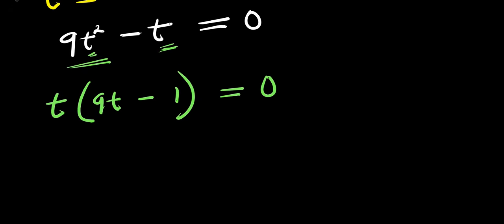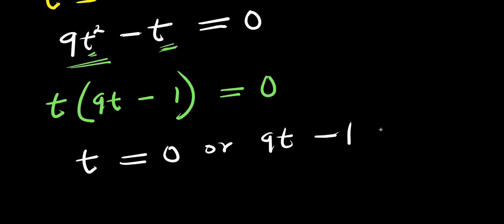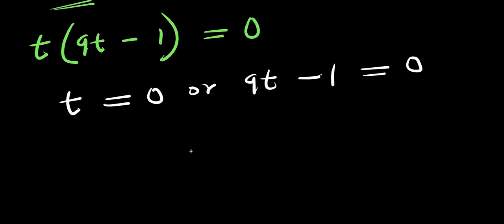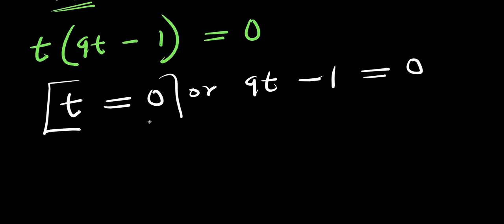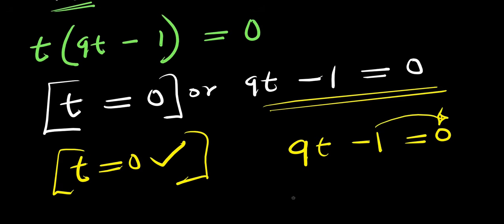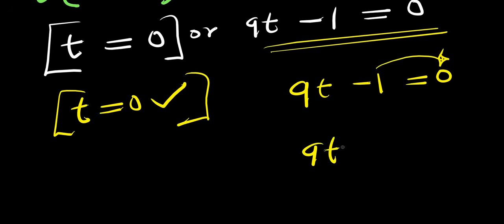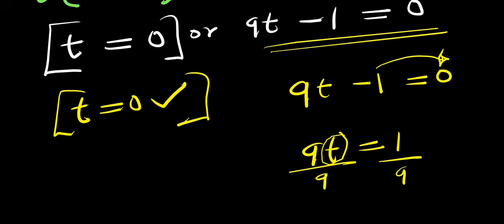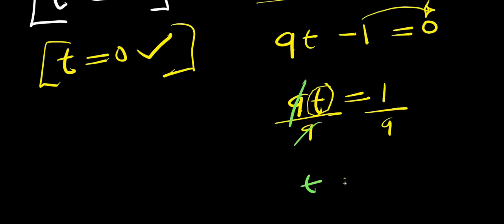At this point, you have two different equations: t equals 0, or 9t minus 1 equals 0. For t equals 0, this is solved already. For 9t minus 1 equals 0, move the negative 1 over, so 9t equals 1. Then isolate t by dividing both sides by 9, giving t equals 1 over 9.